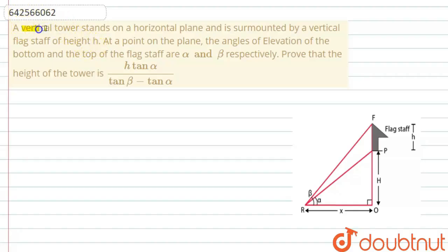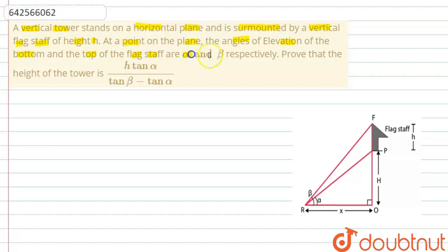The question says that a vertical tower stands on a horizontal plane and is surmounted by a vertical flagstaff of height h. At a point on the plane, the angles of elevation of the bottom and the top of the flagstaff are alpha and beta respectively. Prove that the height of the tower is h·tan α divided by (tan β minus tan α).